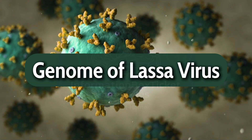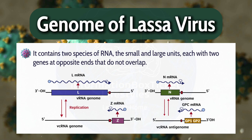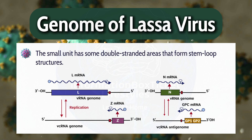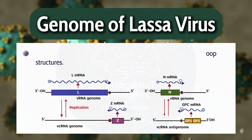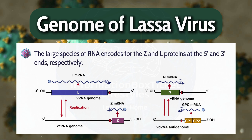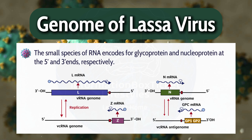Genome of Lassa Virus. It contains two species of RNA — the small and large units — each with two genes at opposite ends that do not overlap. The small unit has some double-stranded areas that form stem-loop structures. The large species of RNA encodes for the Z and L proteins at the 5' and 3' ends, respectively. The small species of RNA encodes for glycoprotein and nucleoprotein at the 5' and 3' ends, respectively.